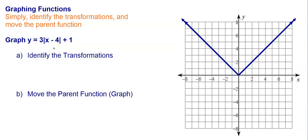On this one, I have 3 times the absolute value of x minus 4 plus 1. Going through my transformations, I have a minus 4 on the inside, which means right 4. I have a plus 1 on the outside, which means up 1. And then on this one I have a size change — a stretch because it's bigger than 1. I have a stretch of 3.